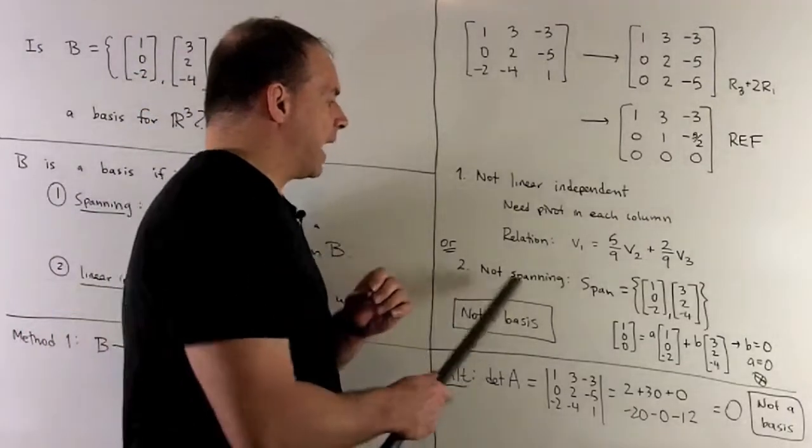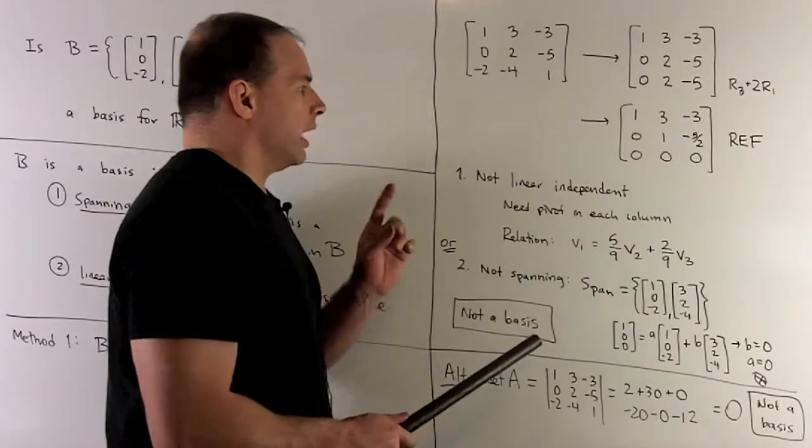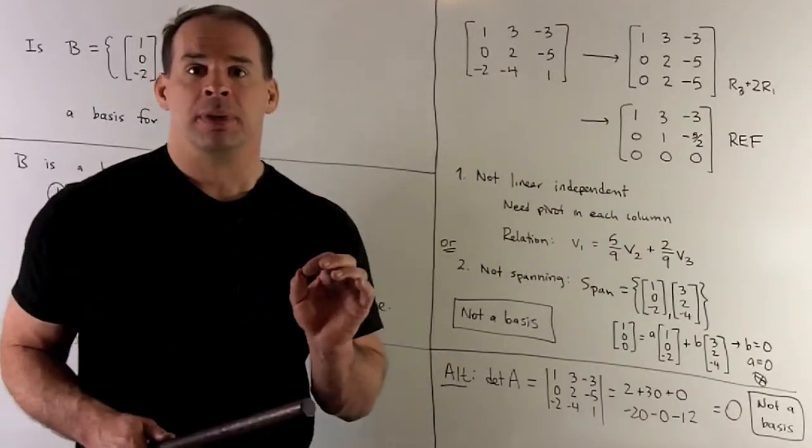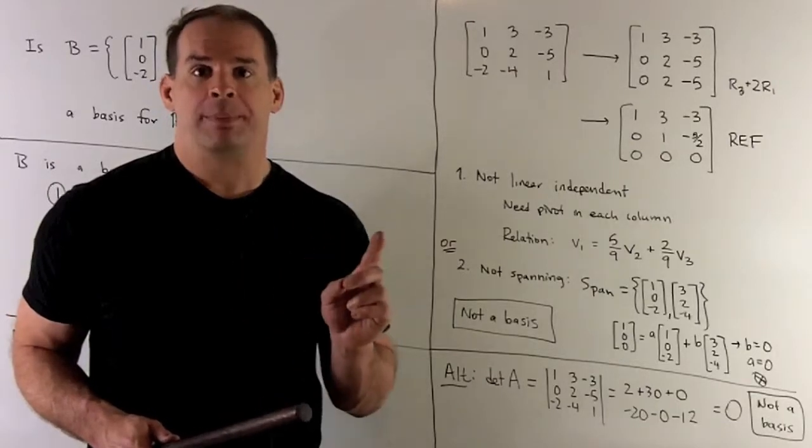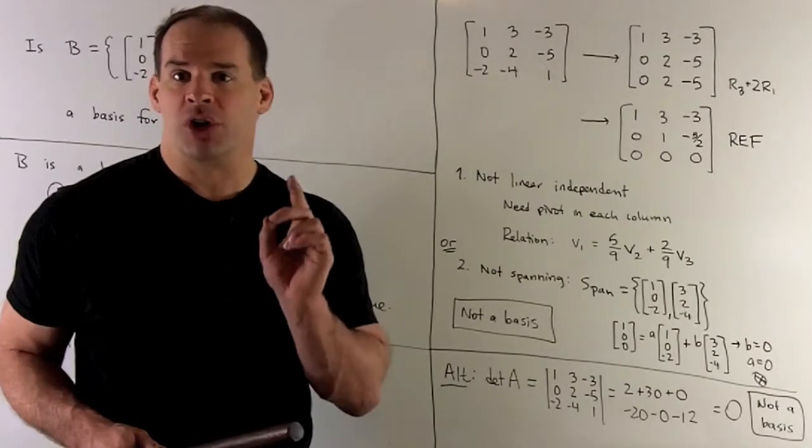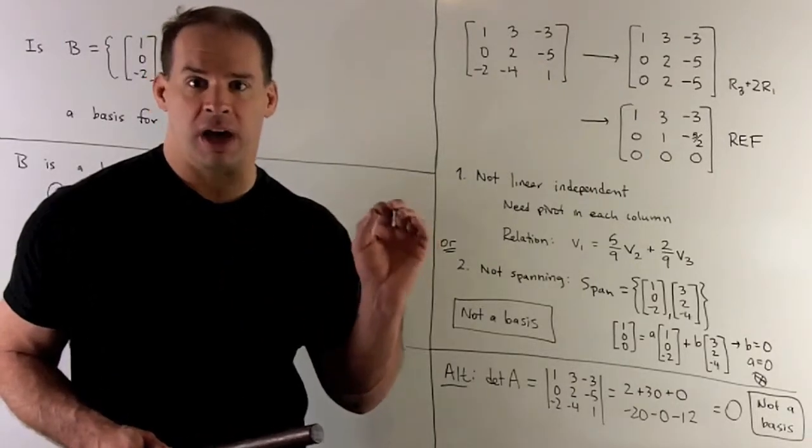We'll also see that we're not spanning. If I take a set of vectors and put them into a matrix to find a basis for the span, we go to row echelon form. The span is formed by taking the original columns that correspond to the pivot columns.